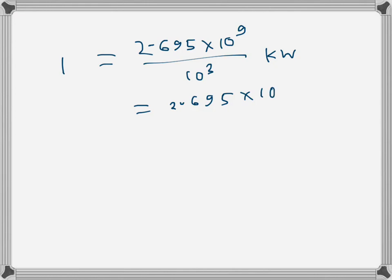So 2.695 × 10^9 divided by 1000 (or 10^3) gives kilowatts, and this value is 2.695 × 10^6 kilowatts. Energy rate is given in terms of kilowatt-hours, so what we have to do is multiply by the number of hours.